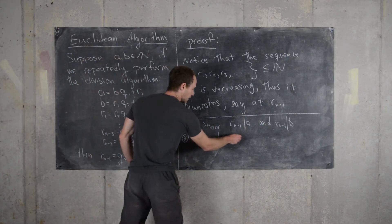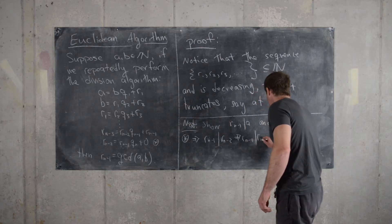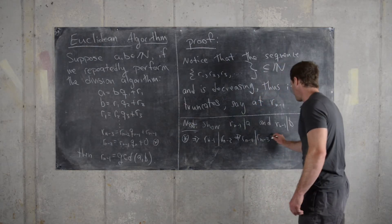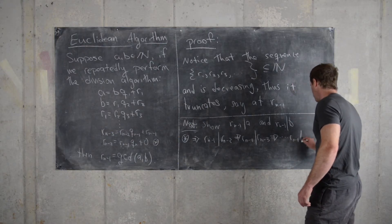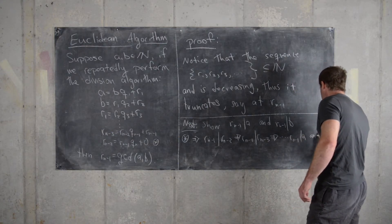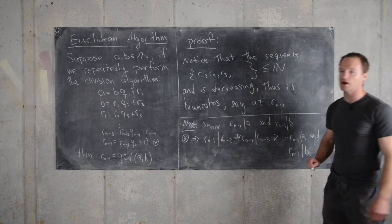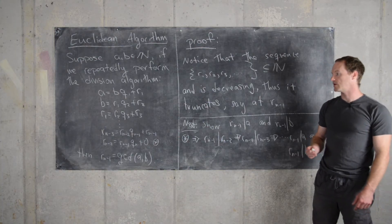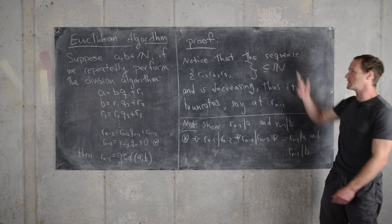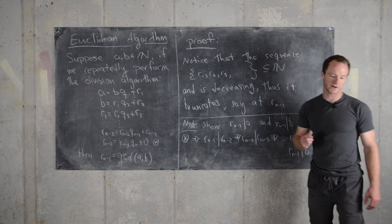So these will all fall from each other. This means R N minus 1 divides R N minus 3, which implies that R N minus 1 divides A and R N minus 1 divides B. So that means this last non-zero remainder is a common divisor of A and B. So I'll clean up the board, and then we'll prove that it's the greatest such common divisor.